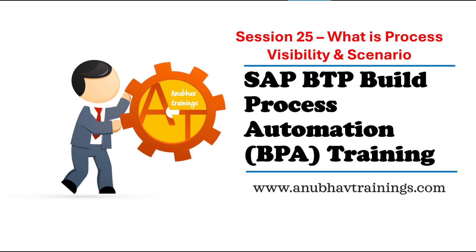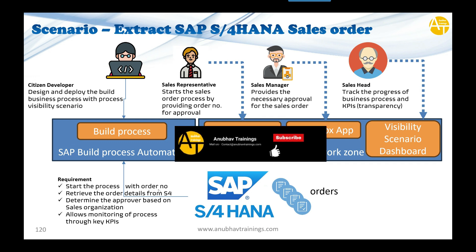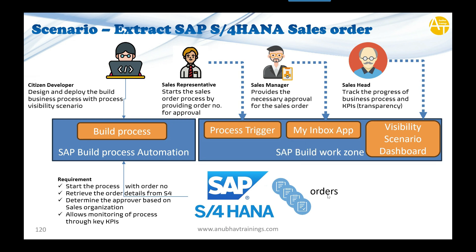Let's understand our scenario. The first persona is the citizen developer, whose job is to design and deploy the business process with a process visibility scenario — that's where you and I come in. We do all this development for our users, and we have different user personas today. The broad requirement is to start a process with an order number. That order number data is stored in S/4HANA in the VBAK and VBAP tables. We retrieve the order details from S/4HANA using our action configured in the last episode.